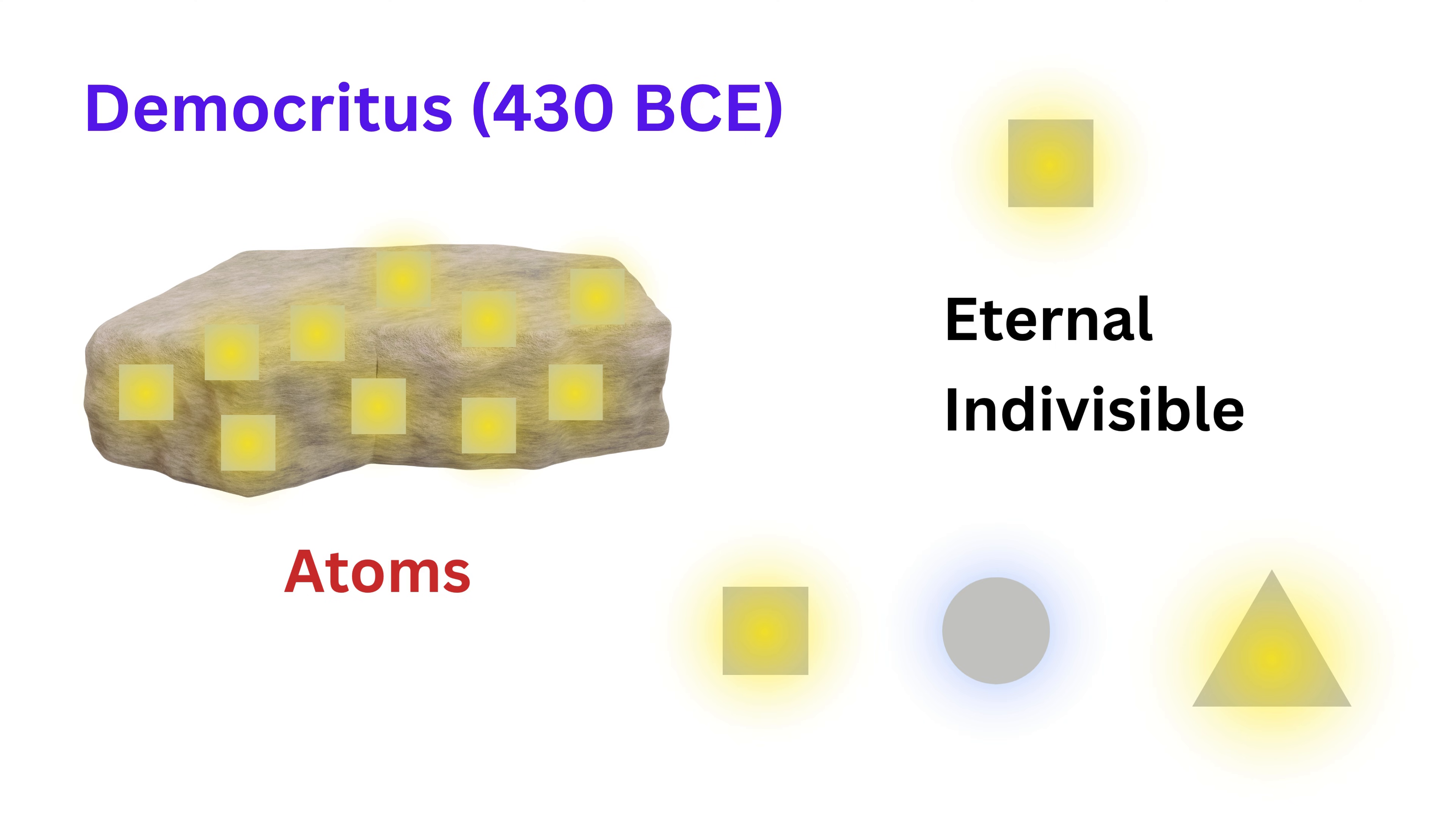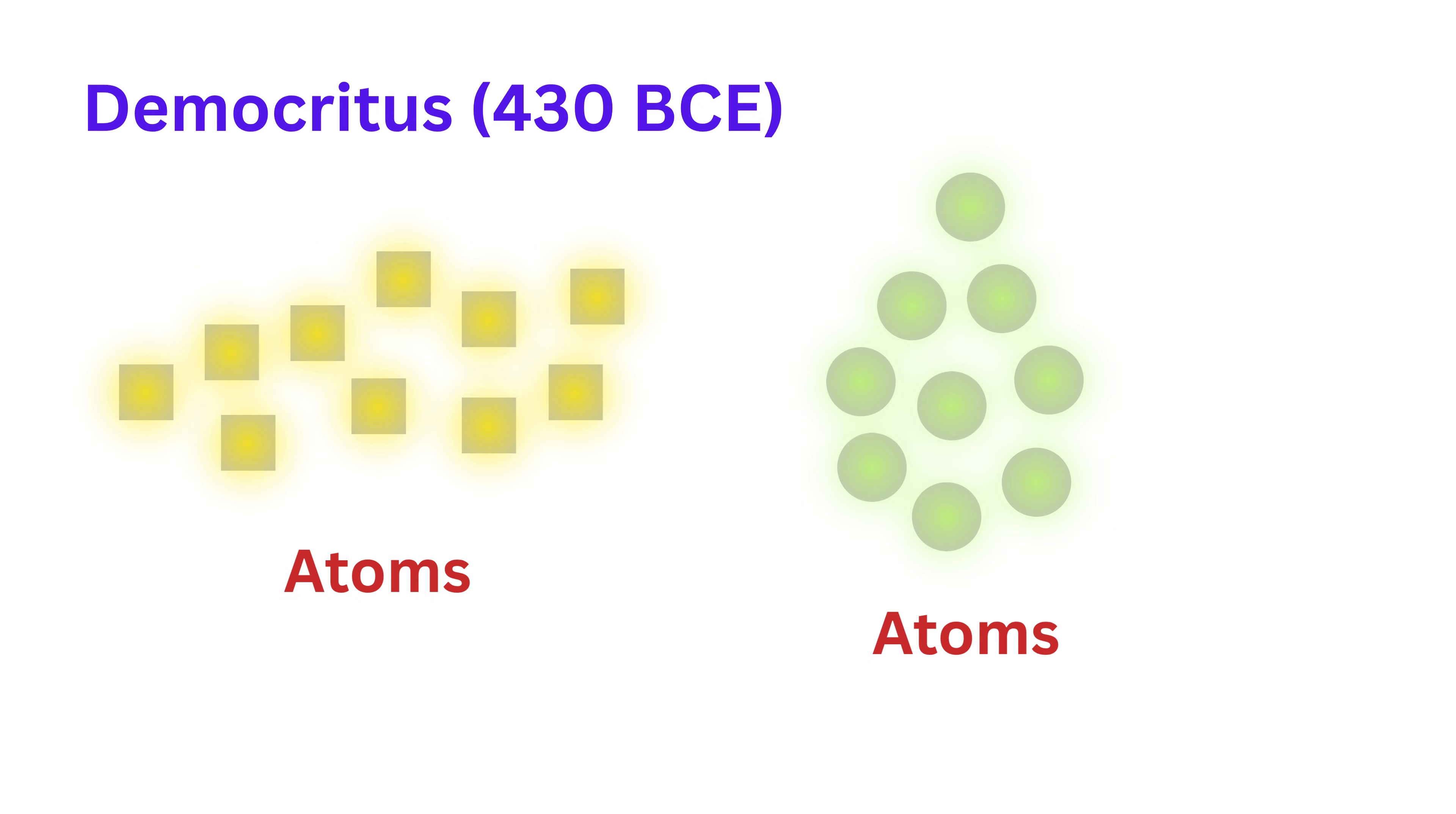He said that atoms have different shapes and sizes, but they don't have different internal qualities like color or taste. The way atoms group together, he said, determines the properties of the matter they form.